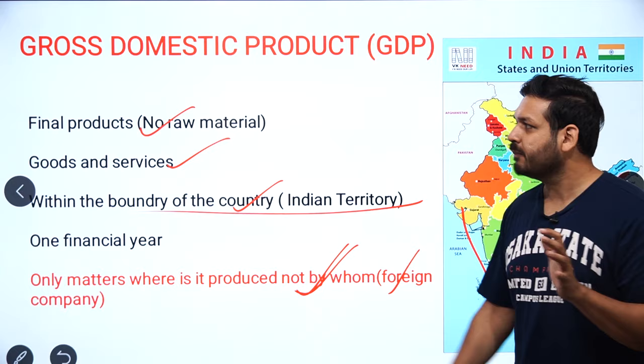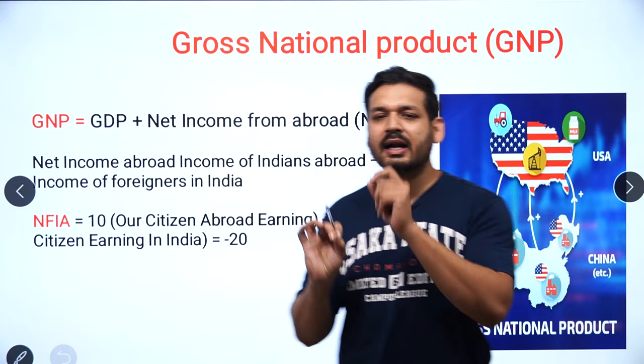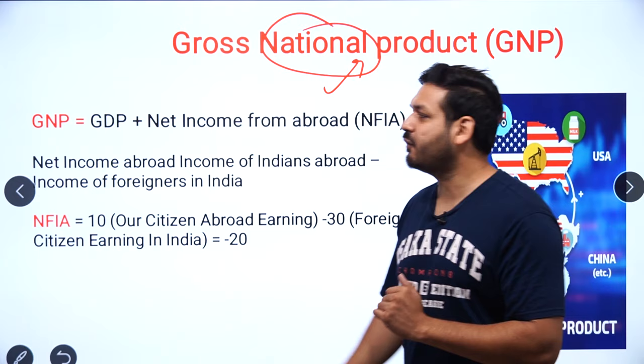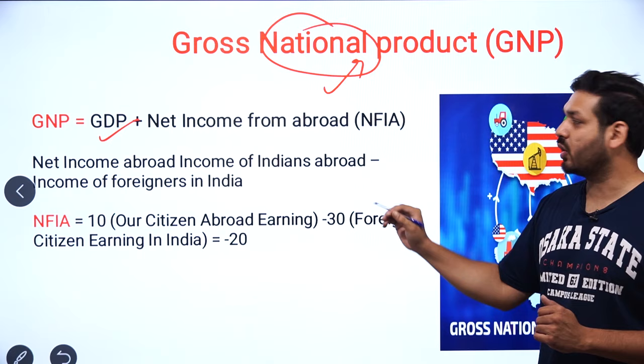Now, GDP versus GNP. The difference between domestic and national: GNP equals GDP plus Net Factor Income from Abroad (NFI). NFI means net income from abroad.